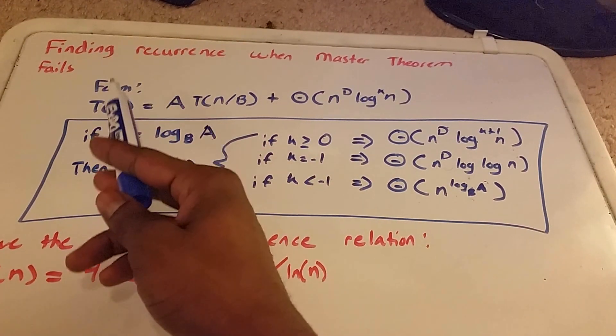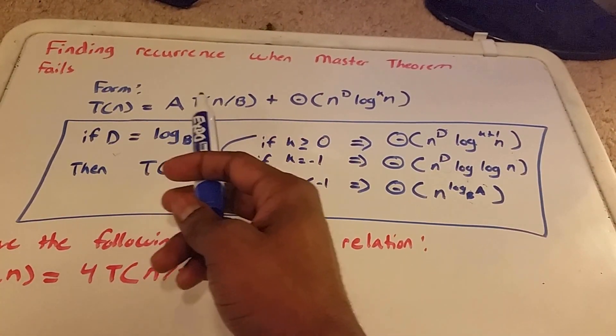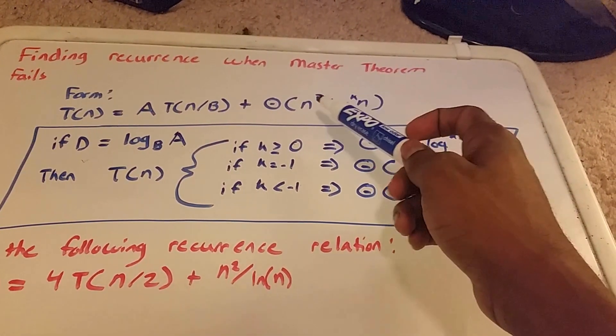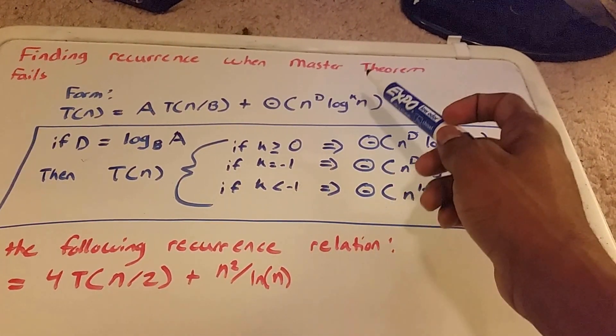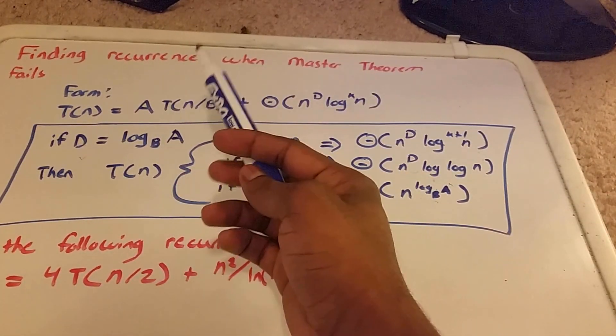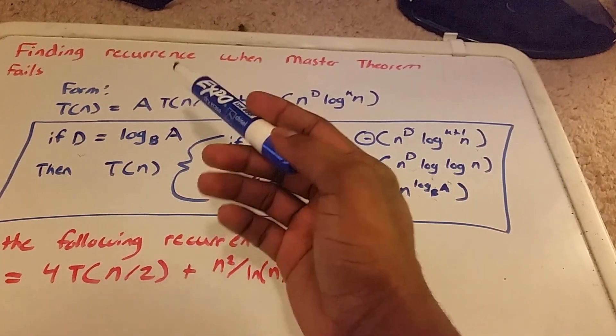So for recurrence relations in this form, where we have A·T(n/B) + Θ(n^D·log_k(n)), where A and B are both constants.